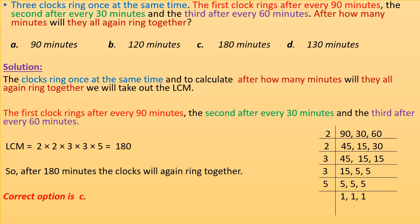To calculate after how many minutes all clocks will ring together, we take the LCM. The first clock rings after 90 minutes, the second after 30 minutes, and the third after 60 minutes. We take the LCM of 90, 30, and 60, and we get 180. So after 180 minutes the clocks will again ring together. Correct option is C.